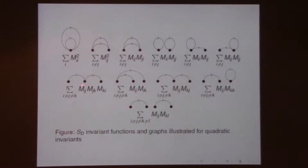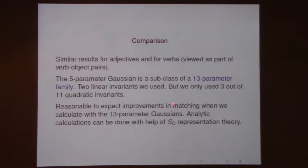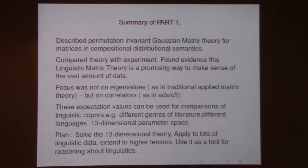That first paper finished by saying: maybe if we had looked at the full 13-parameter Gaussians, we would get consistently near 60%. The summary of part one was that we described permutation-invariant Gaussian matrix theory useful for studying matrices in compositional distributional semantics. We compared the theory with the data and found this is promising. The focus of our calculations was on correlators rather than eigenvalues — because in the traditional Dyson application you look at eigenvalue distributions.